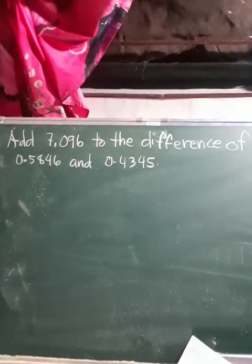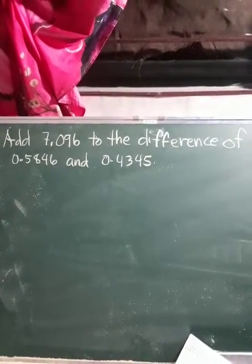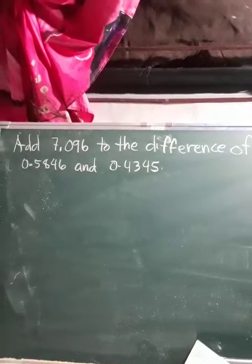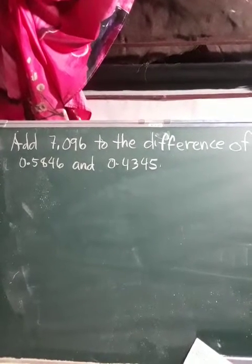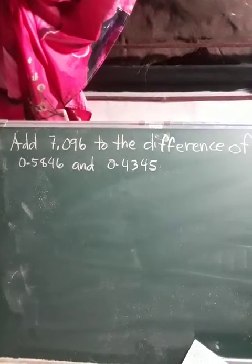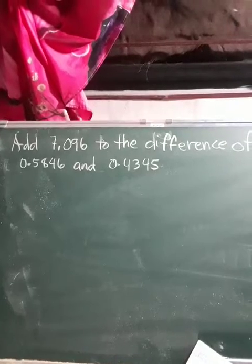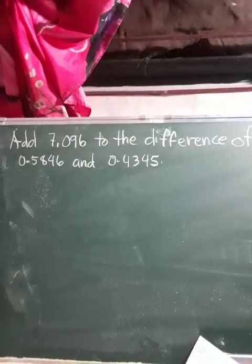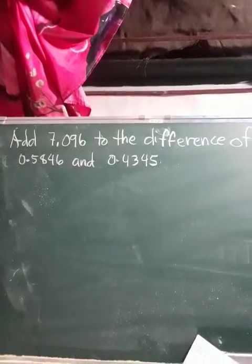How to add 7.096 to the difference of 0.5846 and 0.4345. It is a little bit complicated.